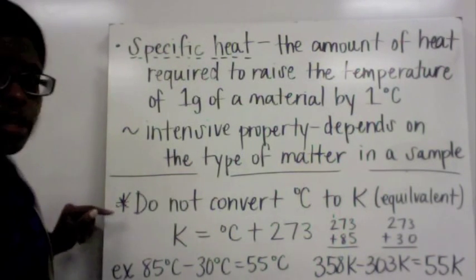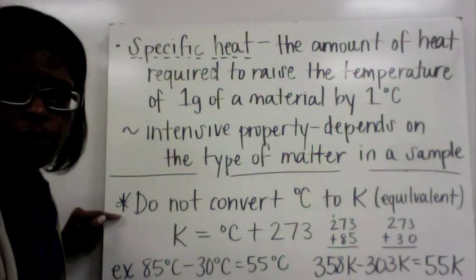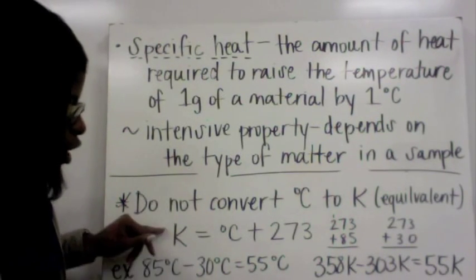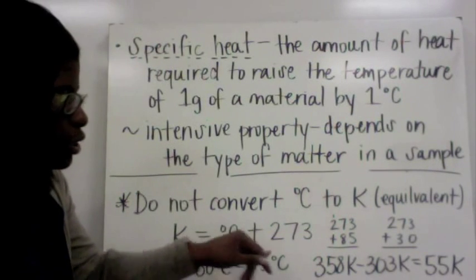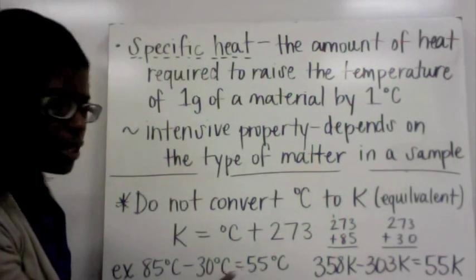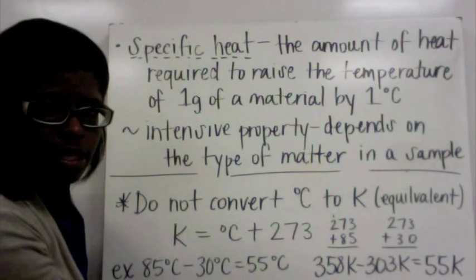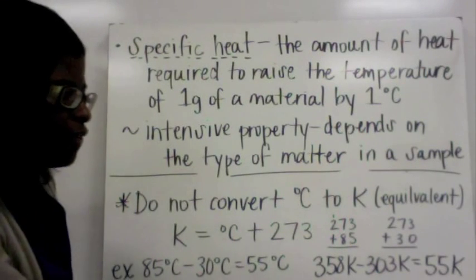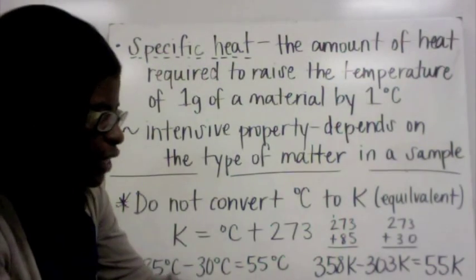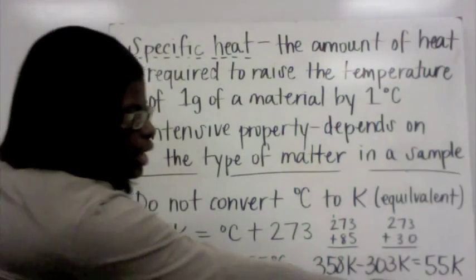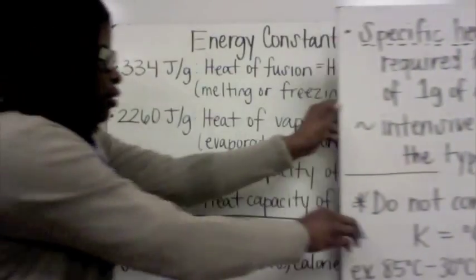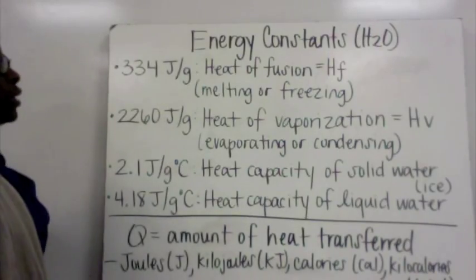Remember, do not convert the temperature Celsius to Kelvin like we were doing before with the pressure, volume, temperature, and number of particle problems — they're equivalent. Kelvin equals degrees Celsius plus 273. For example, 85°C minus 30°C equals 55°C. In Kelvin: 358 minus 303 also gives 55 Kelvin. So the answers are the same.